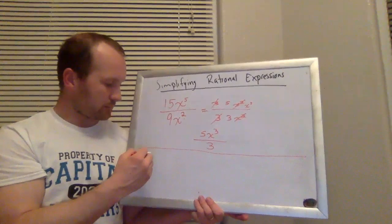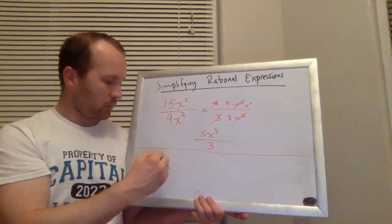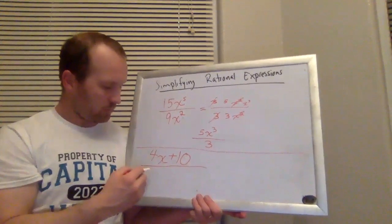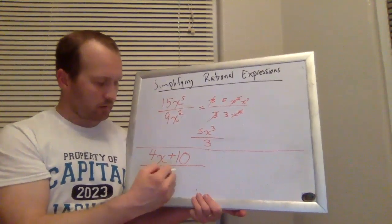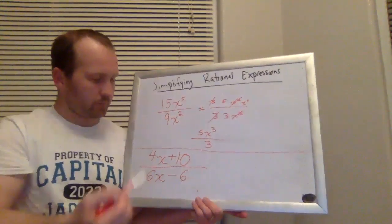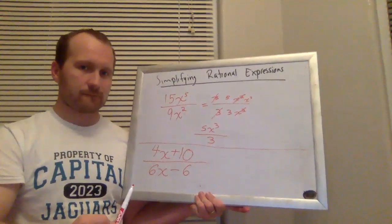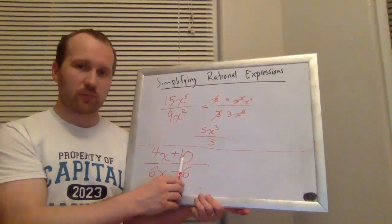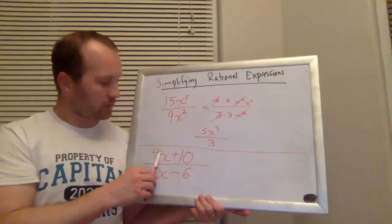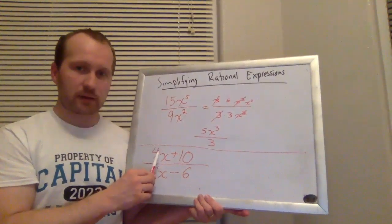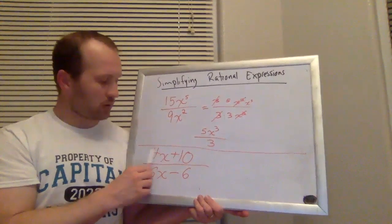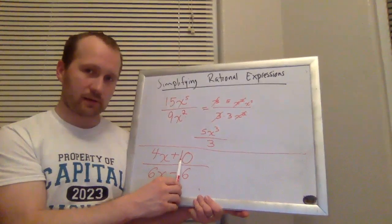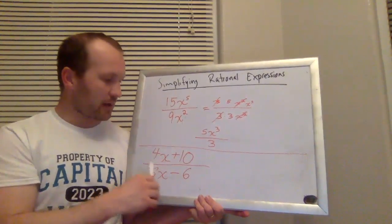What about if I had something like this? 4x plus 10 over 6x minus 6. So in the top, in order to factor this, I need to use my distributive property. I have two terms. Factoring just one term isn't going to help me. I could say 4x is 2 times 2x. But I can't cancel that 2 because it's being added to the 10. So I need to find a factor of this entire thing.